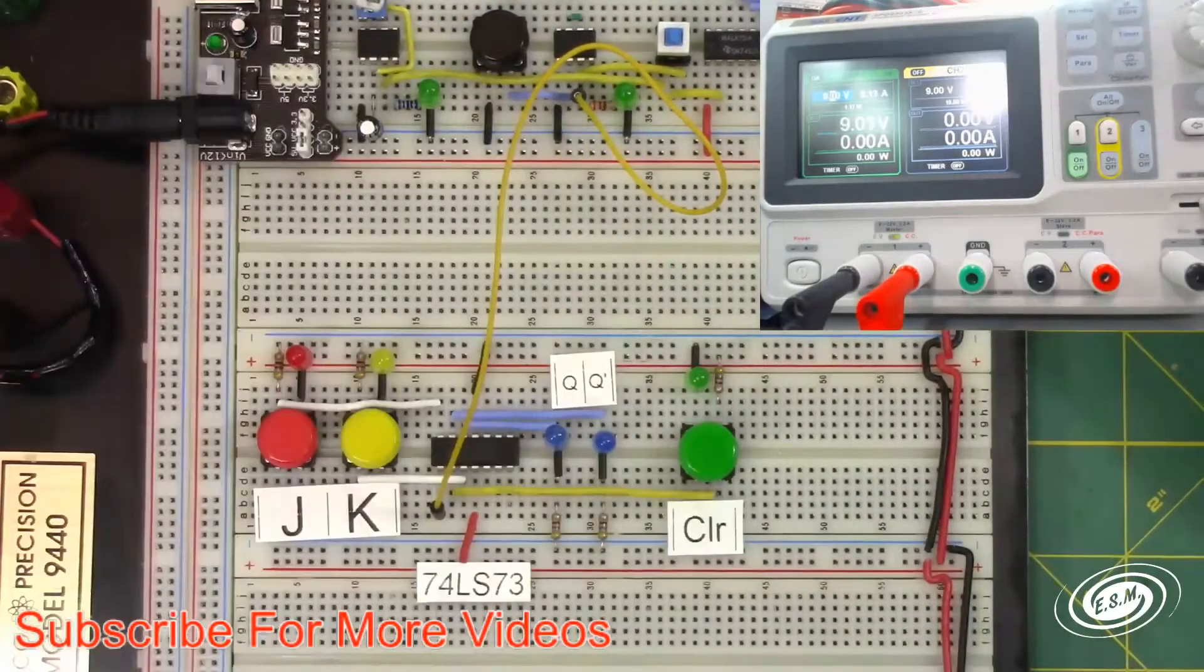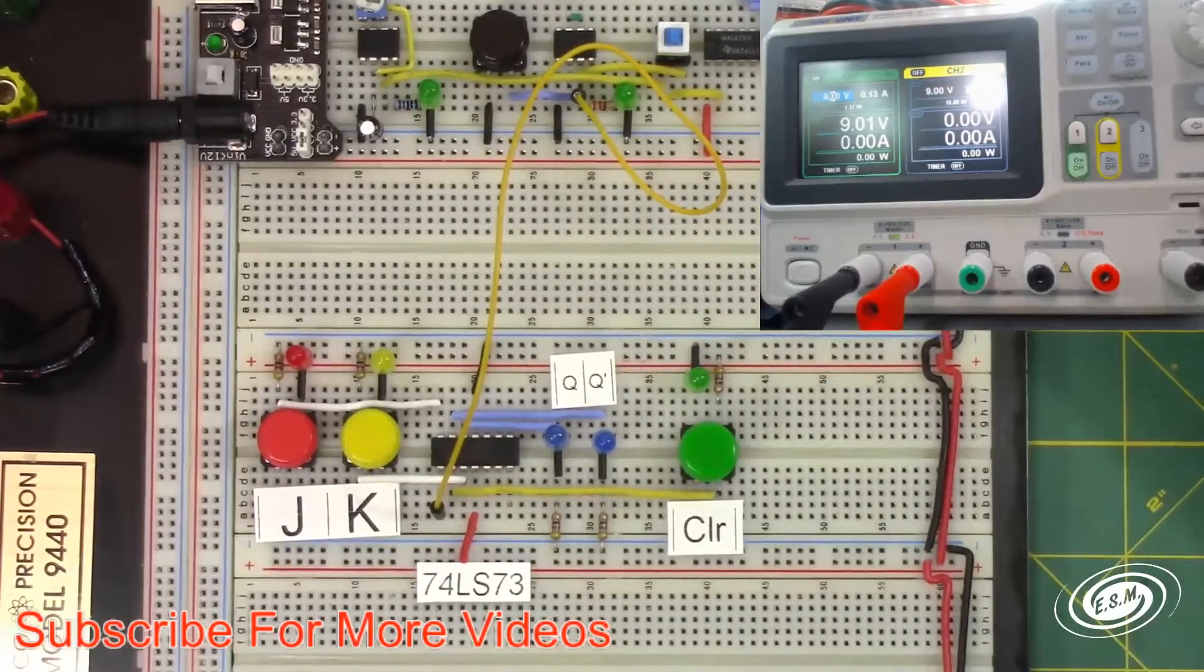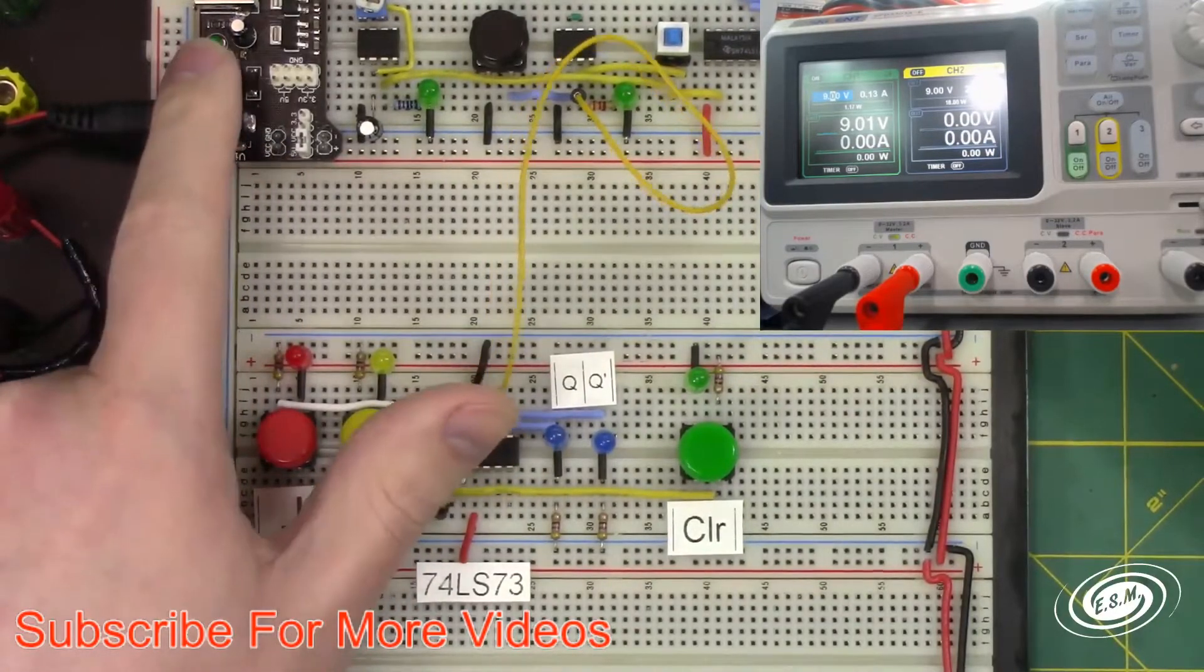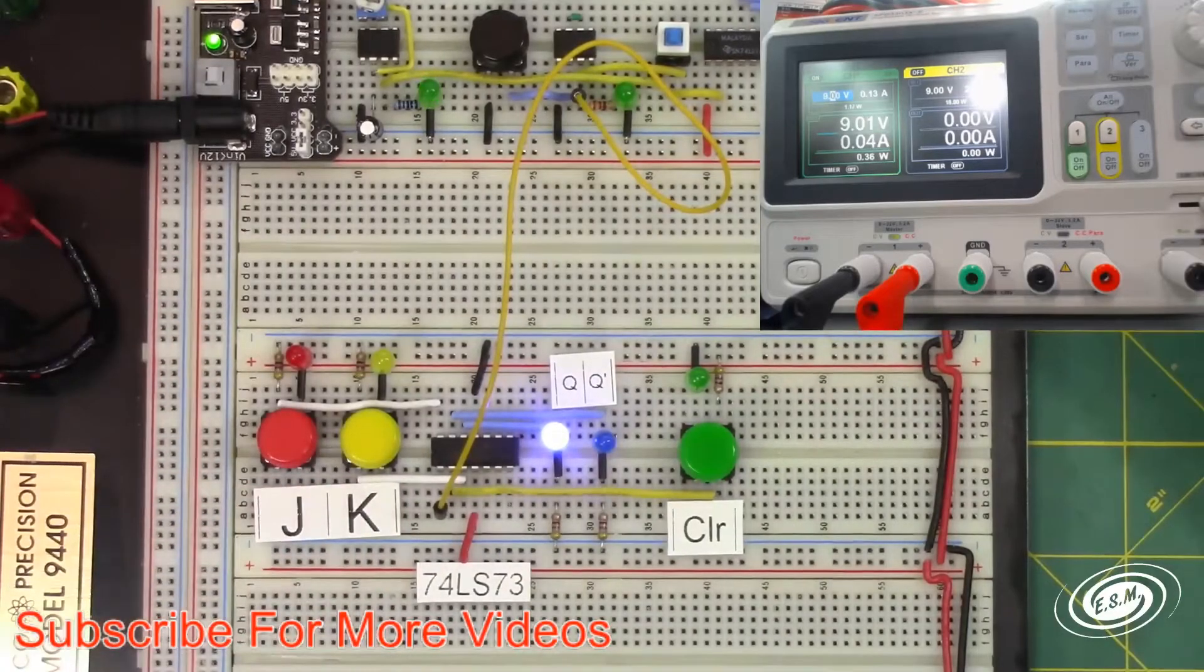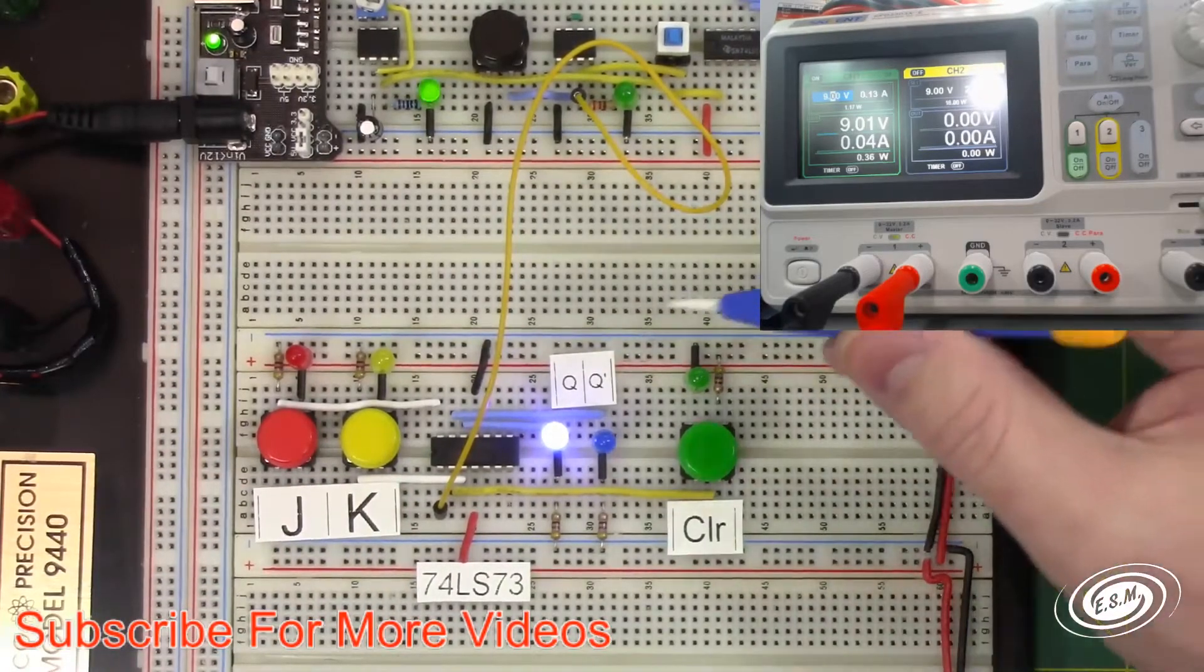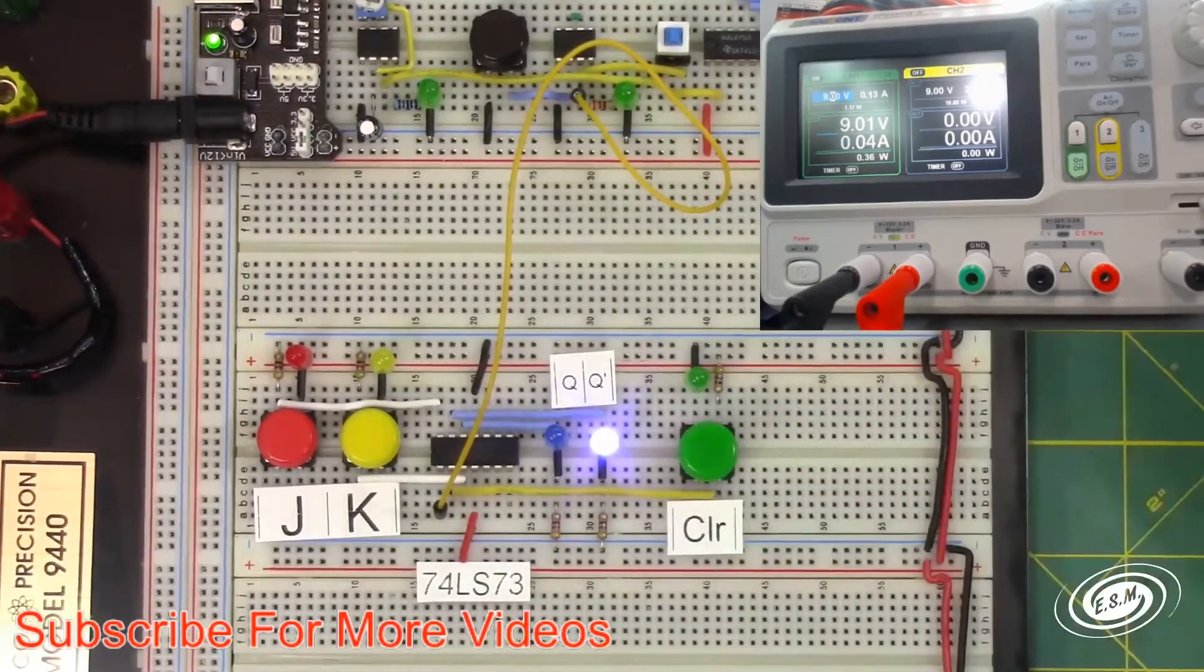Let's turn on the power. We're going to put 9 volts into the circuit because I have a voltage regulator, a power supply unit here that gives me 5 volts on the rails. So right now, the Q is set.